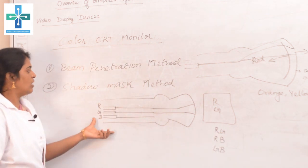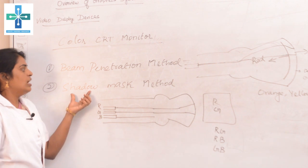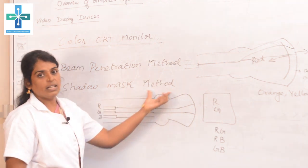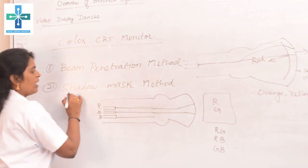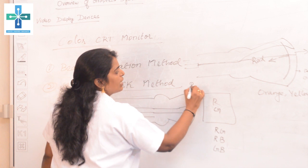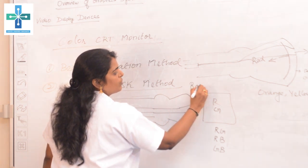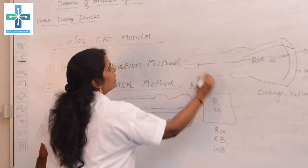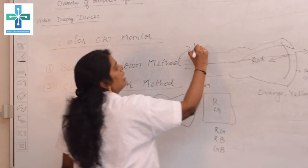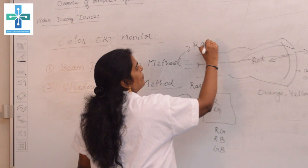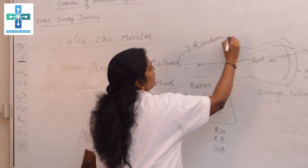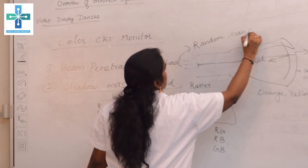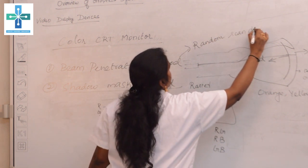The shadow mask method is mainly used in raster scan display devices, and the beam penetration method is mainly used in random scan display devices.